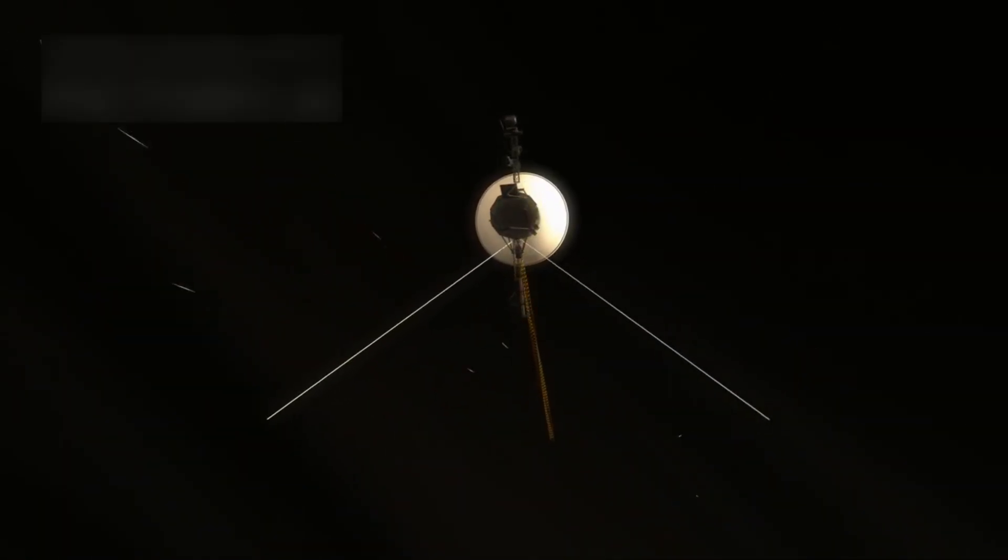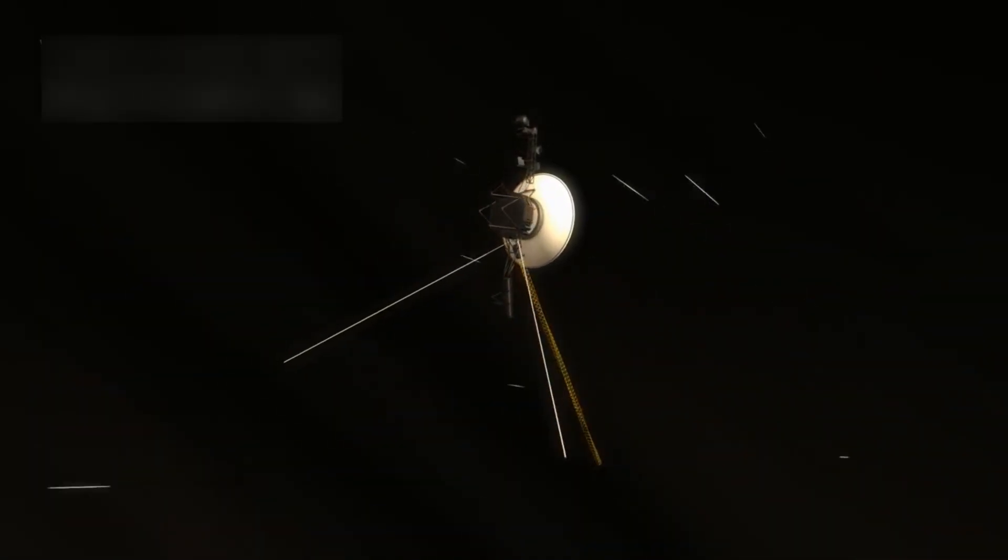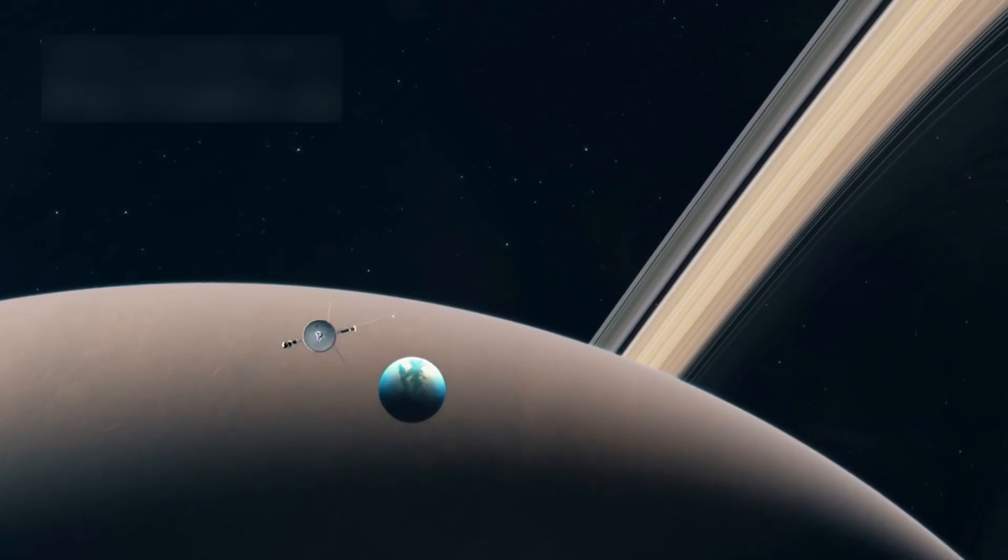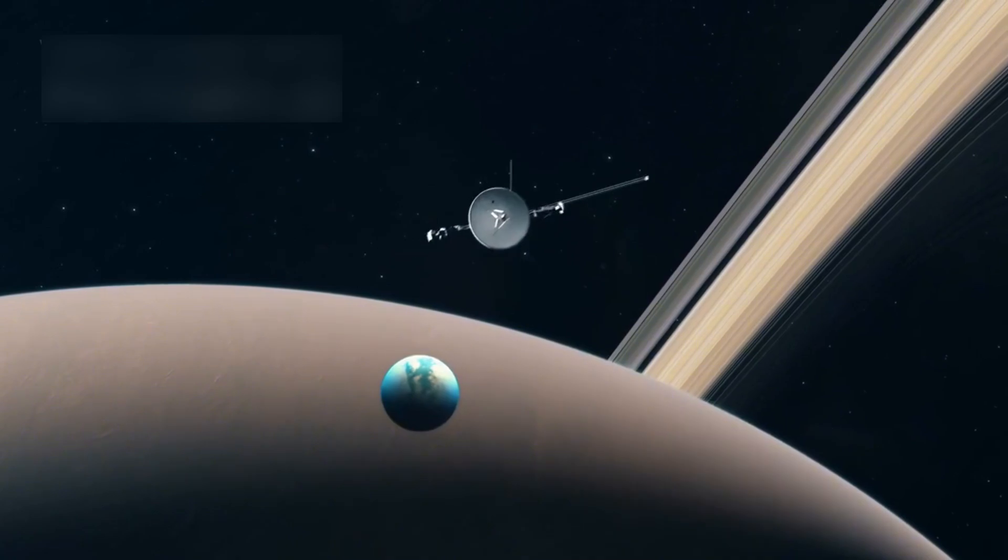As Voyager 1 kept flying, it continued to operate decades past its expected lifespan. It has now been working for over 45 years, traveling more than 14 billion miles from Earth.